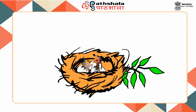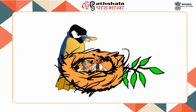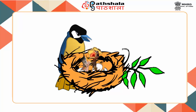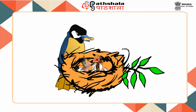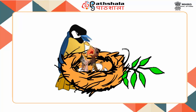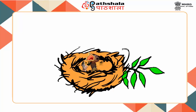Evolutionary computation — consider an example of some bird species hatching, where one bird manages to get more food and get stronger, while the other siblings are deprived of food and are almost kicked out from the nest to die.